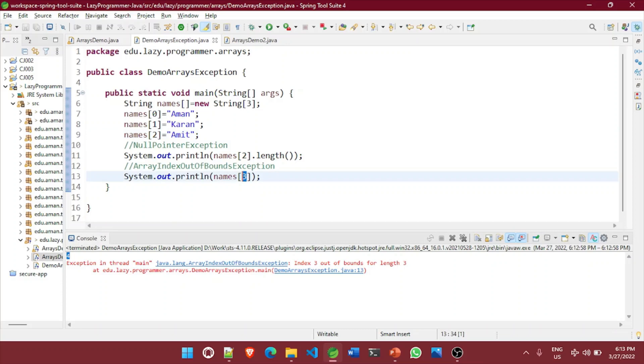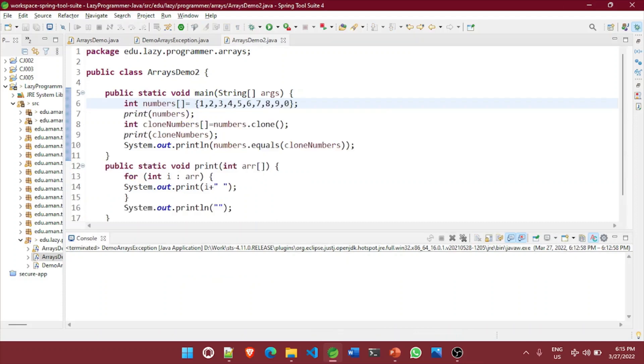That means the maximum index value can go up to three minus one, two. So if we try to access any index value which is not in the range of that specific array, it will throw a runtime exception which is array index out of bound. That means index three is out of bounds for length three. Now let's see that with an example.